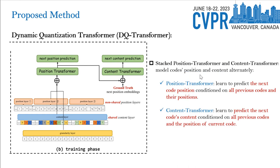DQTransformer adopts a novel stacked transformer architecture, where the position transformer learns to predict the next code position conditioned on all previous codes and their positions, while the content transformer learns to predict the next code content conditioned on all previous codes and the position of the current code.